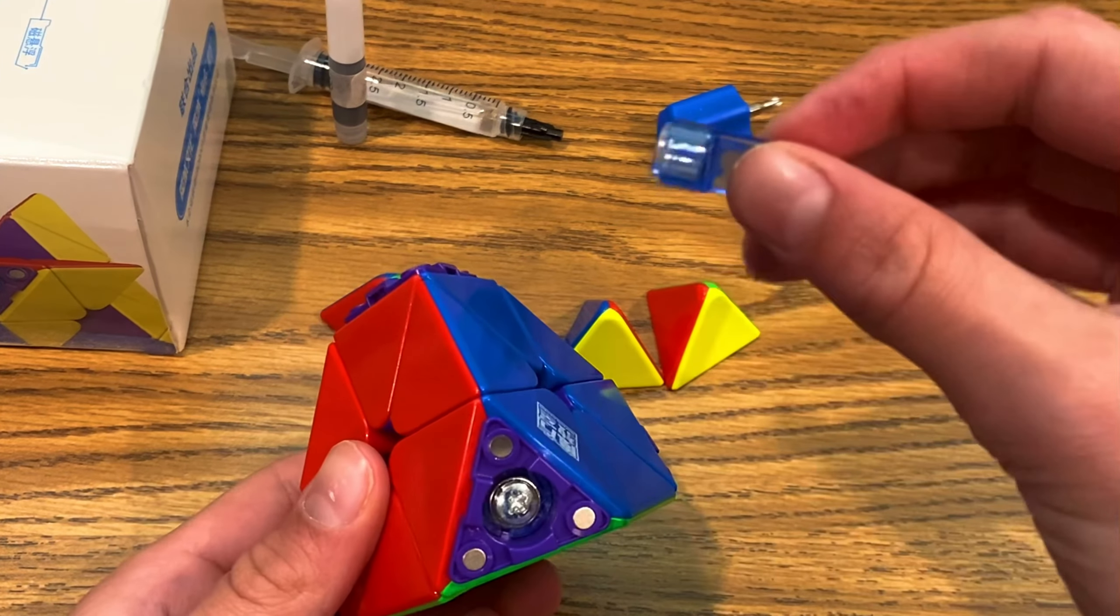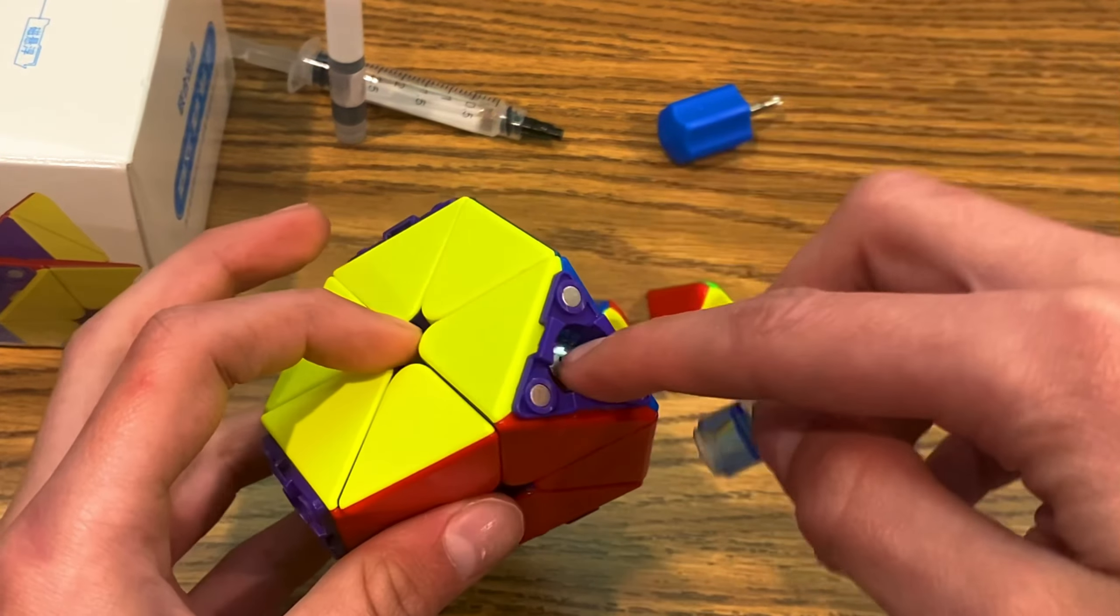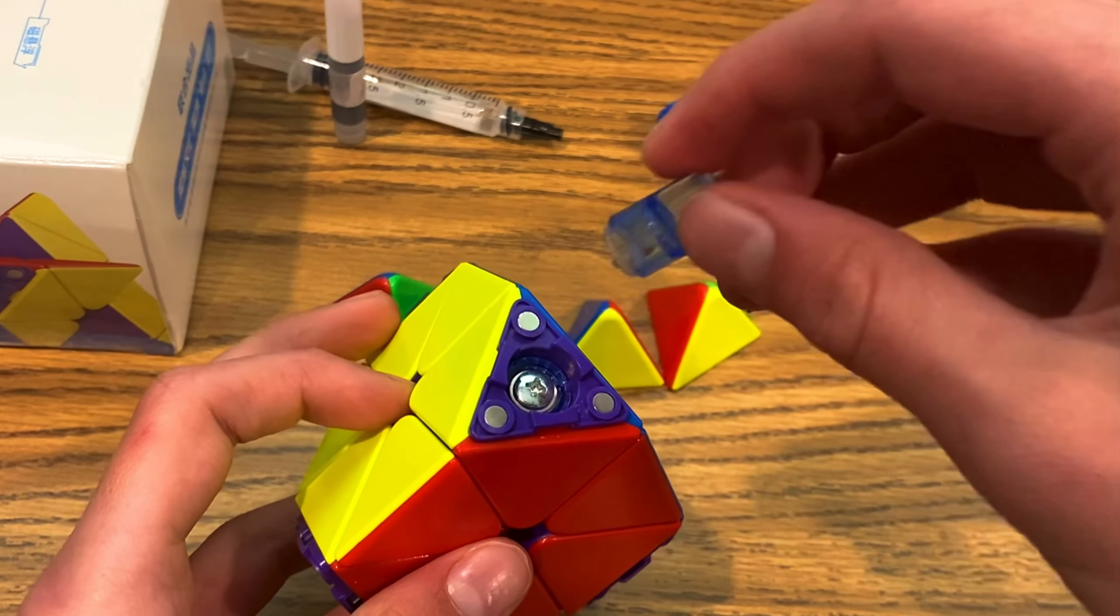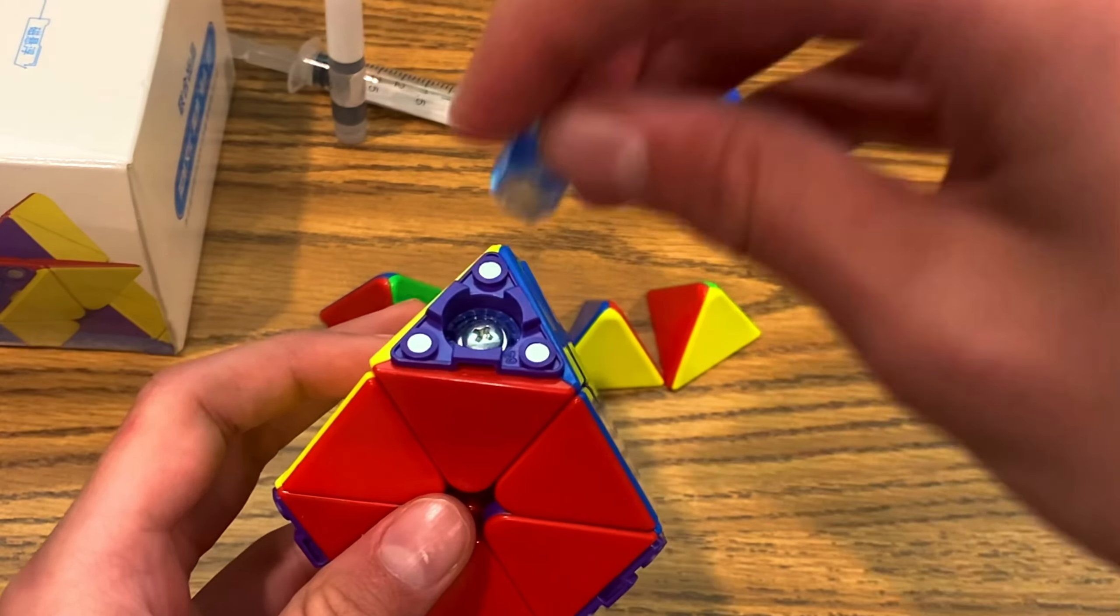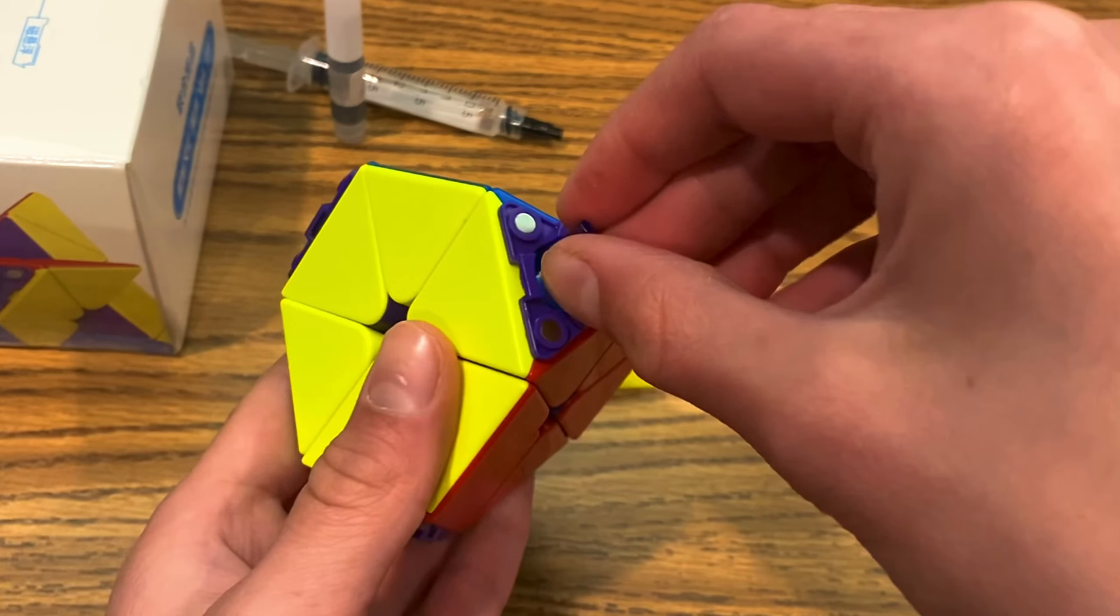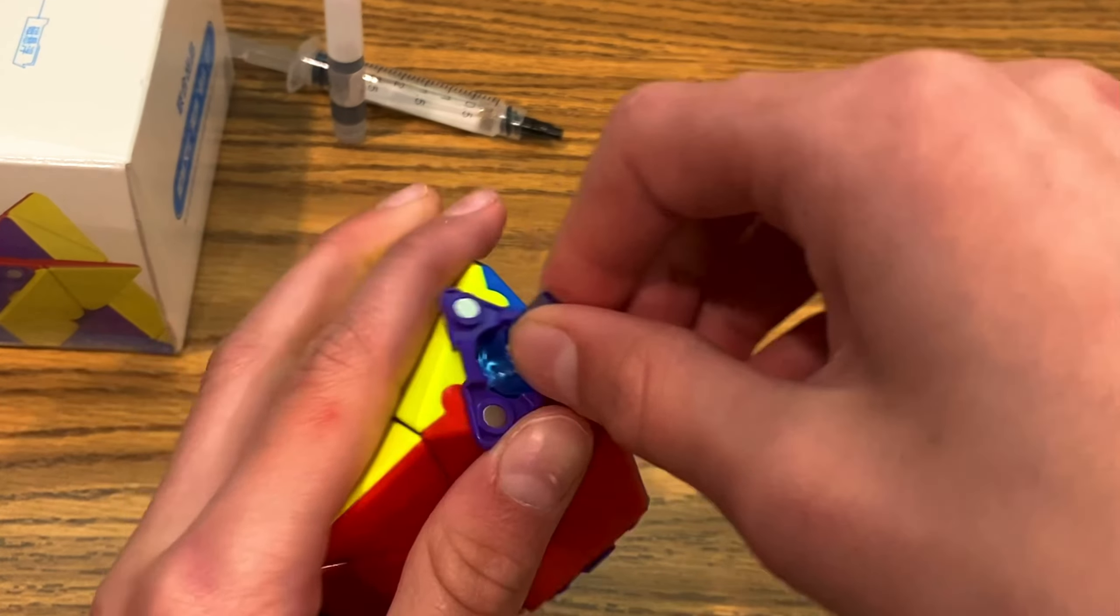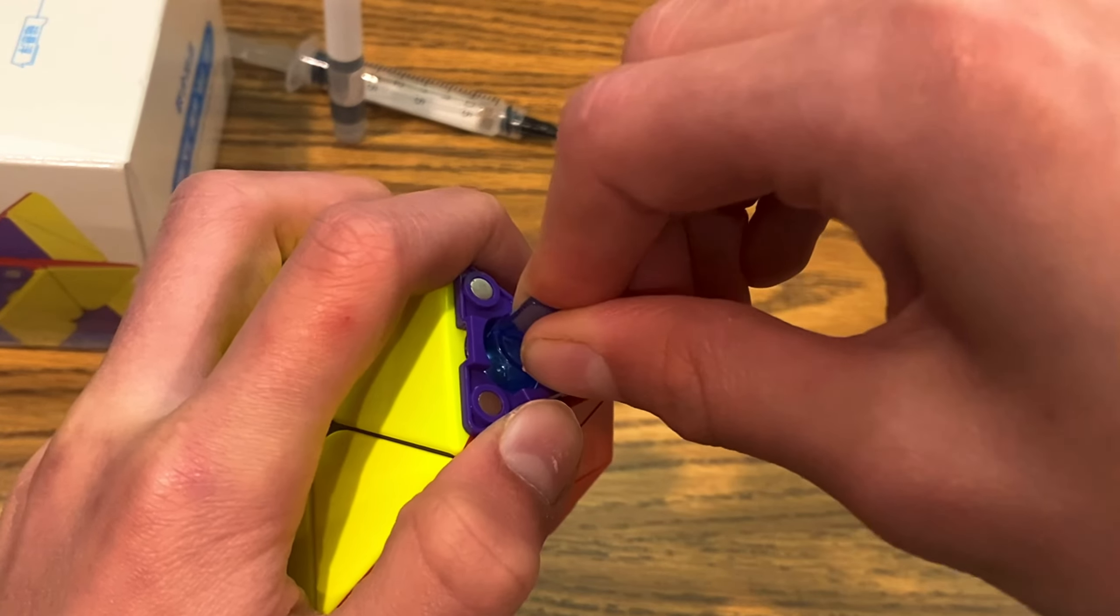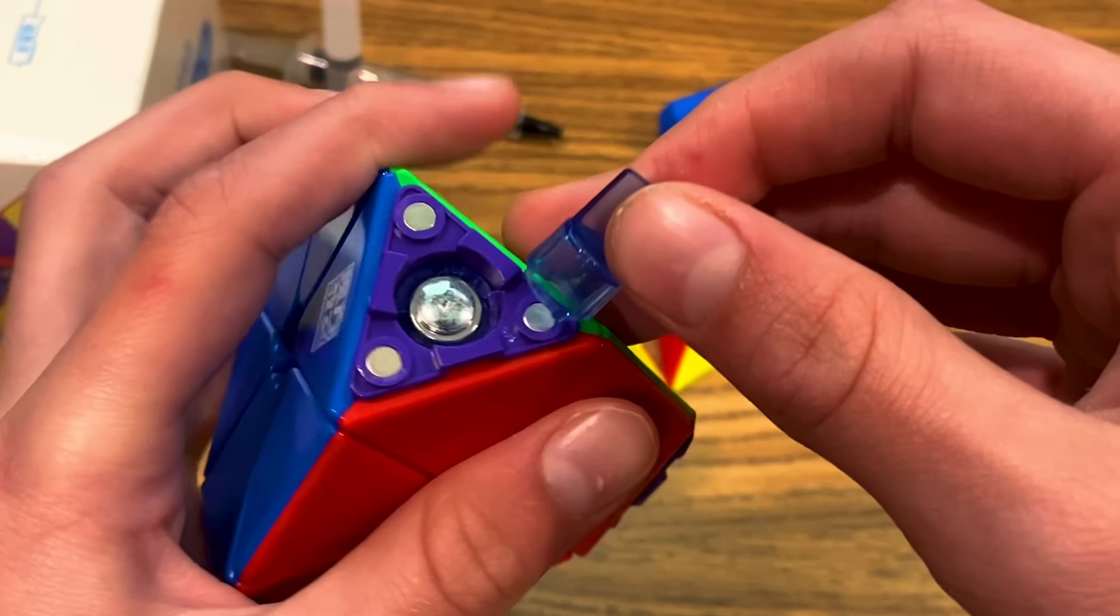First, you want to get this little tool, and make sure that it's on the lowest setting. You'll kind of feel when it clicks, it'll just go down a lot. Make sure it's at the lowest setting, and then set it two past the lowest setting. Just put it in there, in the gaps, feel it click two times, and then do that to all the other sides.